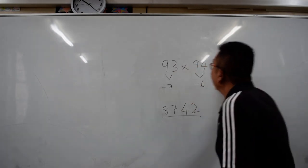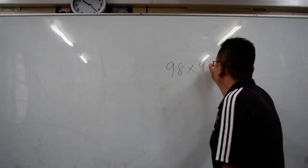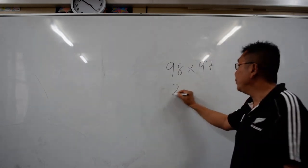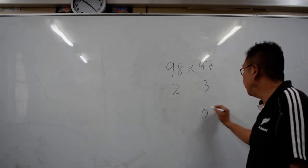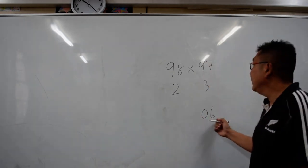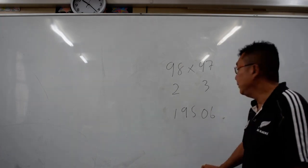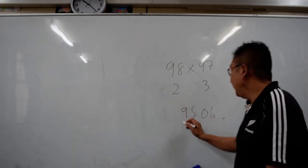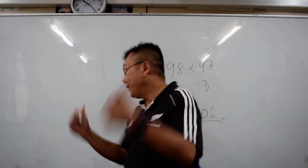98 times 97. To make it 100 is 2. To make it 100 is 3. So the final answer is 06. 2 times 3 is 6, that will be the final answer. And then you add 98 by 97 is 100 and 95. So what happens? You just delete the 1 and the answer is 9506.